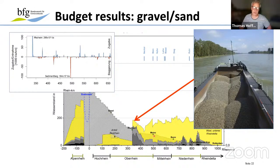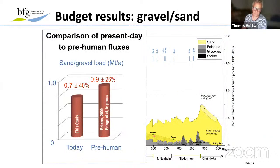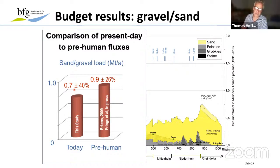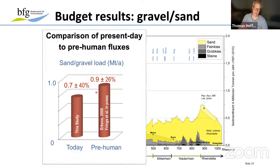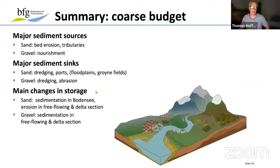To relate the current situation to the long-term perspective, a study by Erkens and Frings estimated a sand and gravel load of around 0.7 million tons per year on a pre-human time perspective. There is some decrease, but given the large uncertainties, one can argue we are doing quite well in maintaining the bed load of the Rhine with this massive sediment supply.